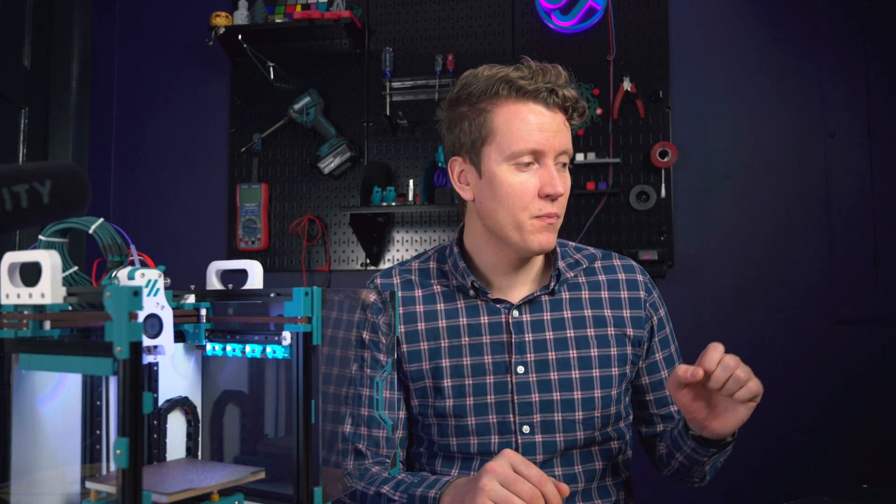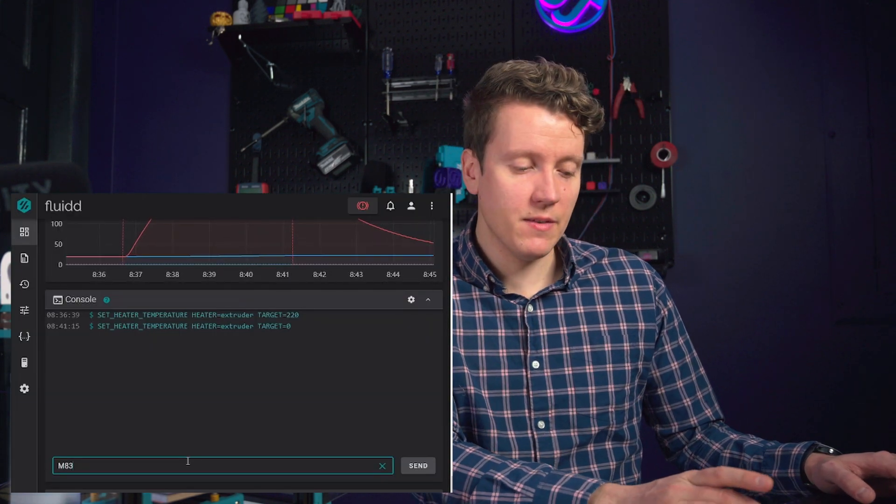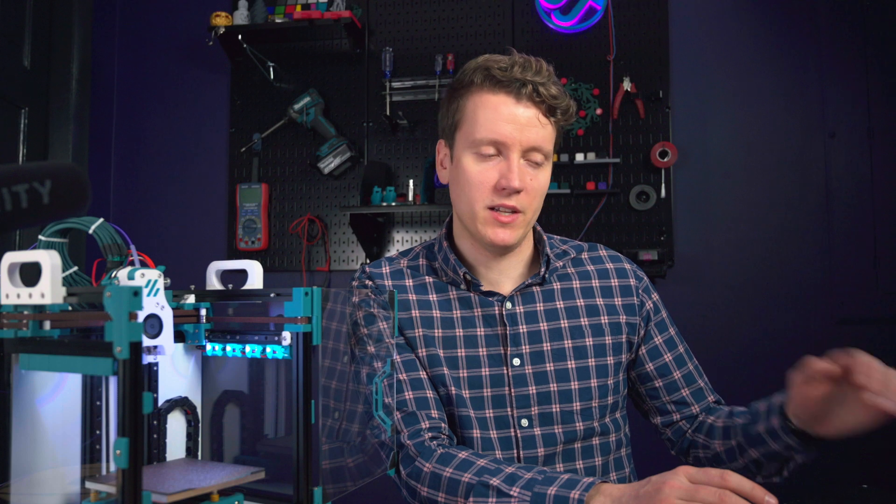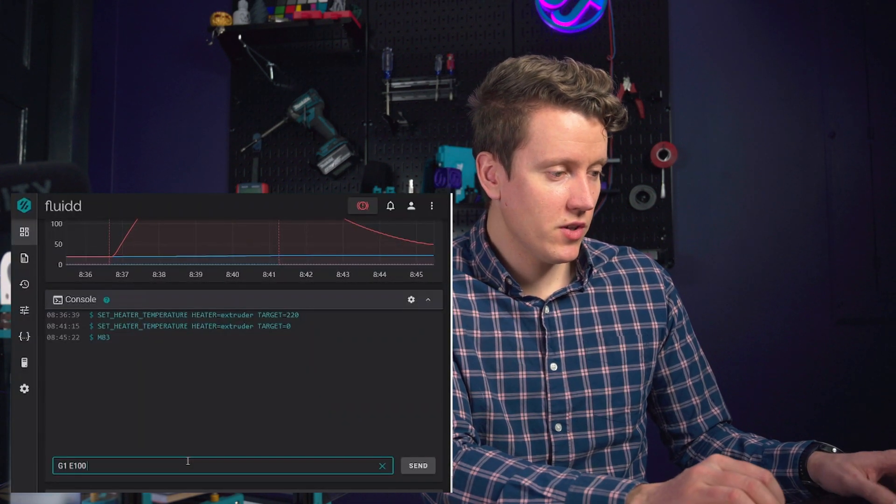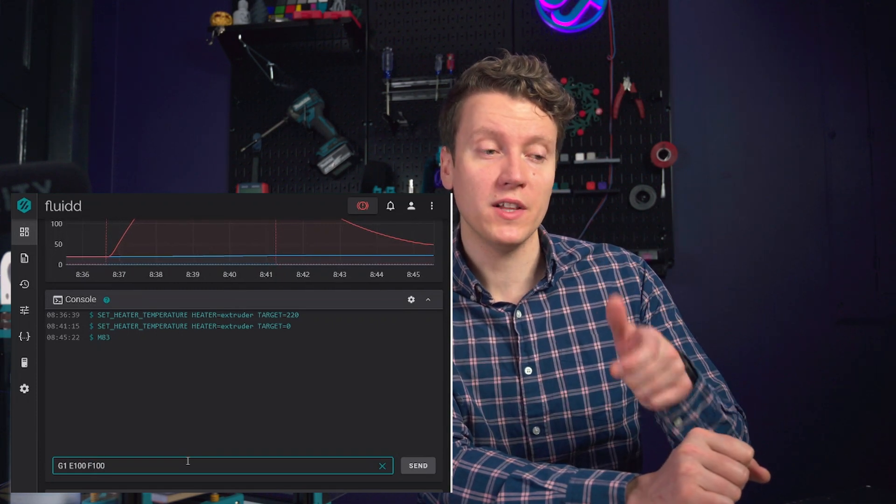So in whatever computer interface you're using, go to the console. And the first command you're going to send is an M83. That moves your positioning system into a relative positioning. So we can tell it just increase by a little bit. Then you send G1, E100, F100. This command tells it to extrude 100 millimeters of filament at a fairly slow rate.